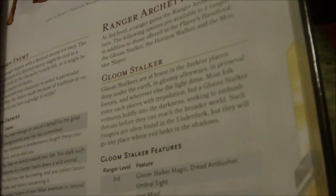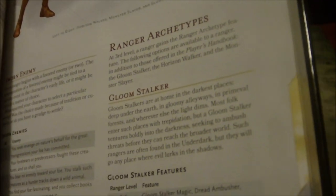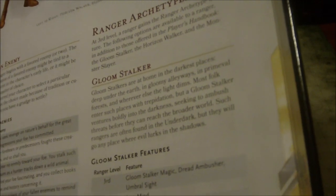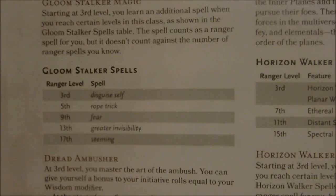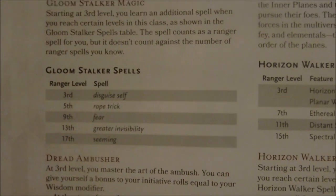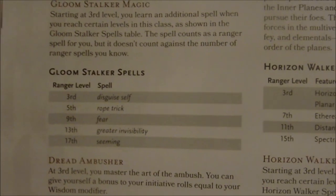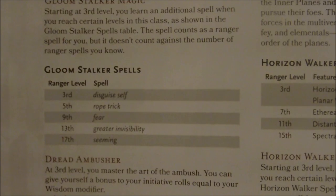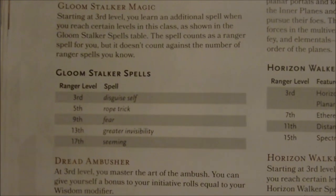The Gloomstalker tends to be rangers more at home in the Underdark, used to darkness, caverns, and things along those lines. They get Gloomstalker Magic: at third level they learn Disguise Self, at fifth Rope Trick, at ninth Fear, at thirteenth Greater Invisibility, and at seventeenth Seeming — all as free spells that count as ranger spells and don't count against spells known. Also at third level, they get Dread Ambusher: you master the art of the ambush. You give yourself a bonus to initiative rolls equal to your Wisdom modifier. At the start of your first turn of each combat, your walking speed increases by 10 feet. If you take the Attack action on that turn, you can make one additional weapon attack as part of that action, and if it hits the target takes an extra 1d8 damage of the weapon's damage type.